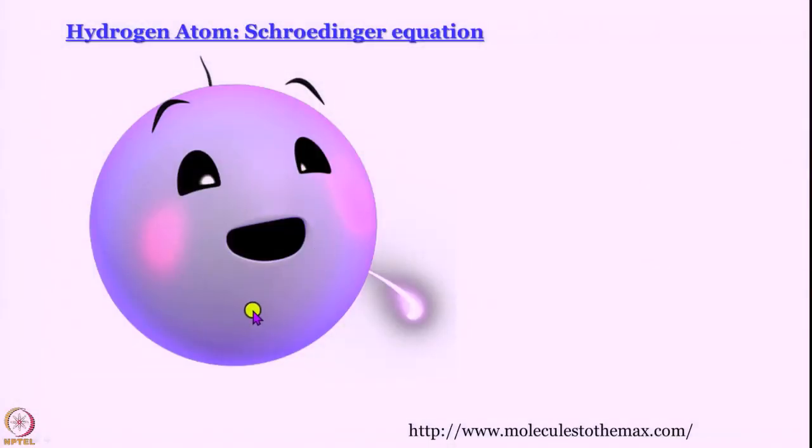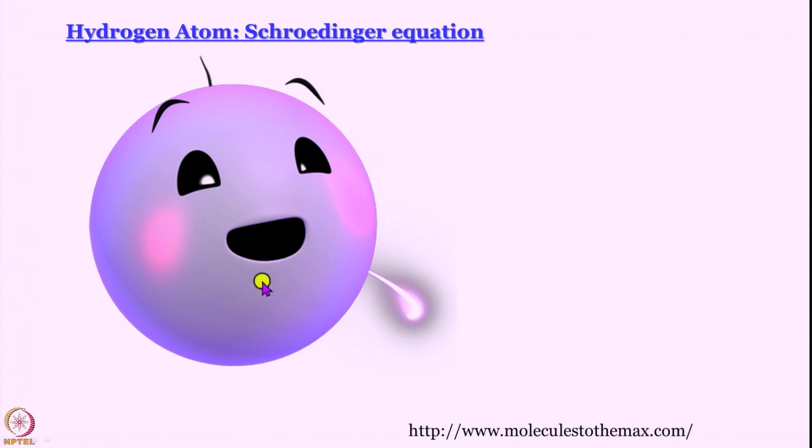Having discussed free particle and particle in a box, we are now set to get into the Schrödinger equation of the hydrogen atom. We should not forget that even though Rutherford's model is not tenable, the basic experiment performed by Marsden — alpha particles shot at a gold foil, most going through, some deviating, one in 20,000 turning back — that experiment was not wrong. The observation that almost the entire mass and all the positive charge of the nucleus is centered at a point still holds.